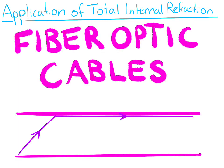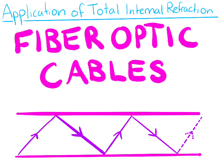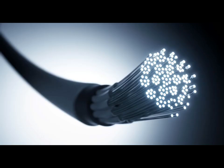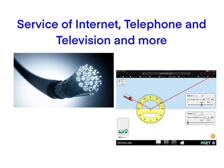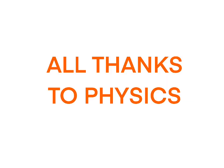Fiber optic cables utilize the critical angles and total internal refraction to transmit light and information over long distances at a higher speed. Fiber optics utilization of total internal refraction provides services of the internet, telephone, and television. All of those are possible thanks to physics.